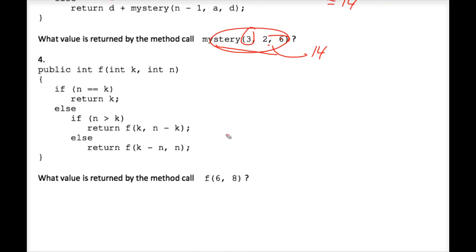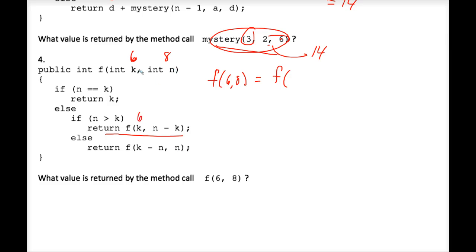Number four on this worksheet — this is a tricky one. We have a recursive method f with two parameters. Stack frame one: f of six, comma, eight. Is n equal to k? Is six equal to eight? Nope — so we go to the else. Is n greater than k? Yes, eight is greater than six. So we execute f of k, comma, n minus k. k is currently six, and n minus k is eight minus six equals two. So f of six, eight equals f of six, two.